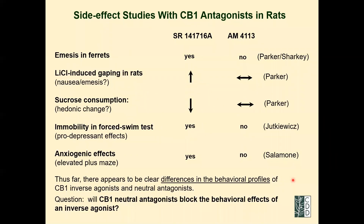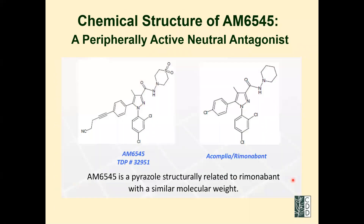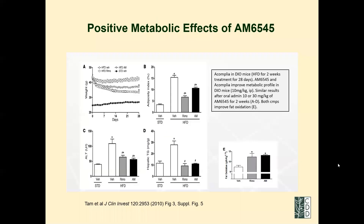Sanofi found that many effects of CB1 antagonism were peripheral — both central and peripheral effects occurred, but side effects like nausea were largely peripheral. So we decided to make a compound that doesn't get into the brain — one that is both neutral and peripheral: AM6545. This compound does a lot of good things peripherally. It does not elicit signs of nausea in rats, unlike Accomplia.